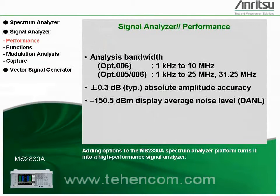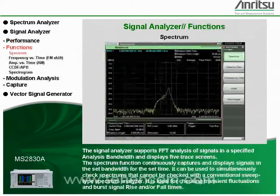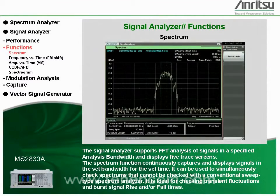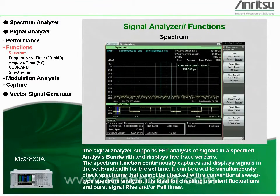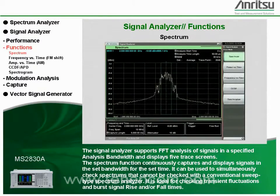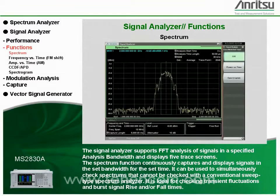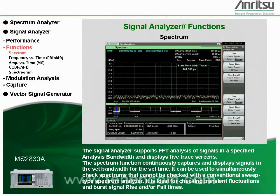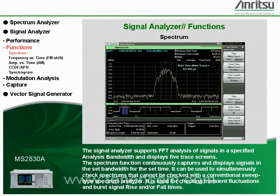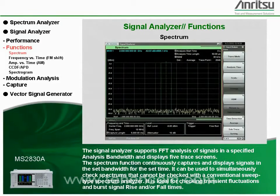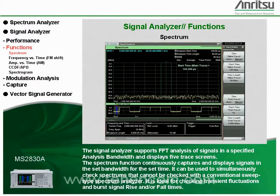Adding options to the MS2830A spectrum analyzer platform turns it into a high-performance signal analyzer. The signal analyzer supports FFT analysis of signals in a specified analysis bandwidth and displays five trace screens. The spectrum function continuously captures and displays signals in the set bandwidth for the set time. It can be used to simultaneously check spectrums that cannot be checked with a conventional sweep-type spectrum analyzer. It's ideal for checking transient fluctuations and burst signal rise and/or fall times.